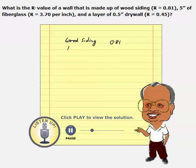We have a second layer of fiberglass. This fiberglass thickness is given as 5 inches, and its R value is given as 3.7 per inch.